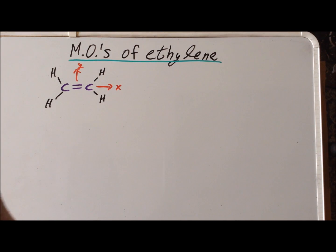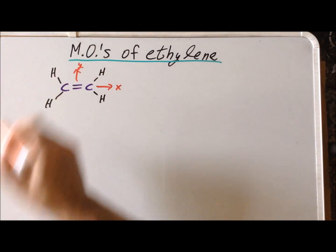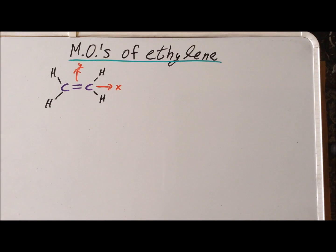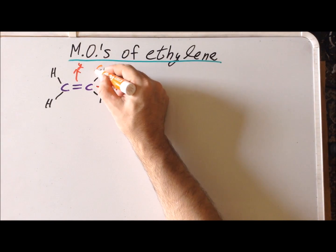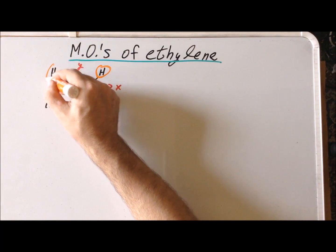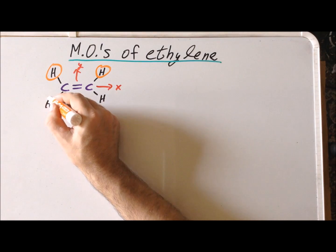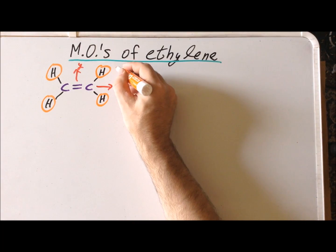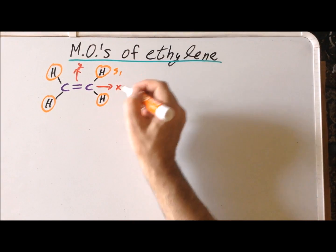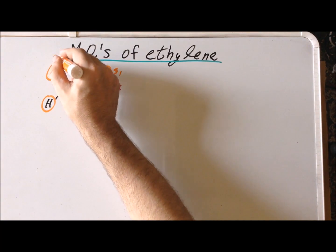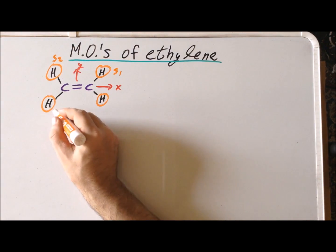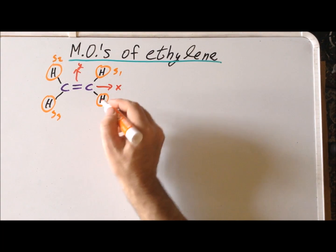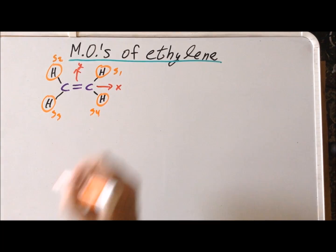We will first derive the sigma molecular orbitals, and we notice that the group orbitals on hydrogen are all hydrogen 1s orbitals. So our first step is to label the group orbitals on hydrogen. We will call them S1, S2, S3, and S4.